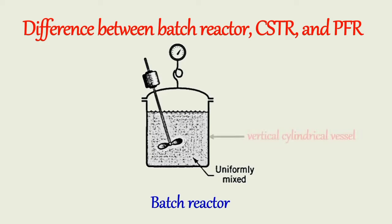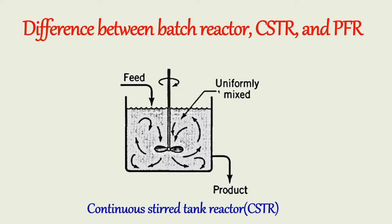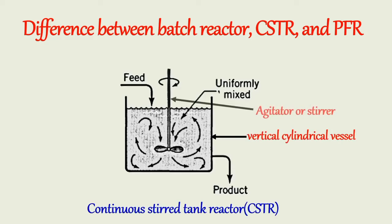A batch reactor consists of a vertical cylindrical vessel equipped with an agitator or stirrer for stirring the contents. It is also provided with either an external jacket or cooling coil, or both, for heating or cooling the reactor contents. CSTR is a vertical cylindrical vessel equipped with a mechanical stirrer and provision for heat transfer. CSTR is also called a back mix or mixed flow reactor.